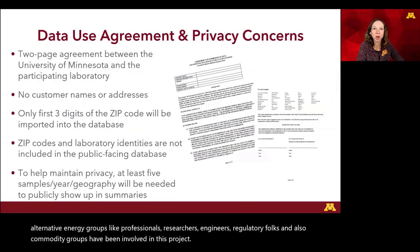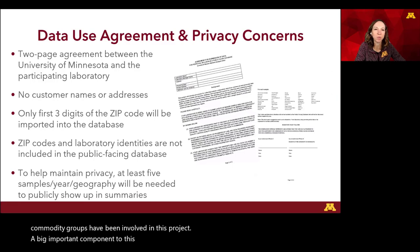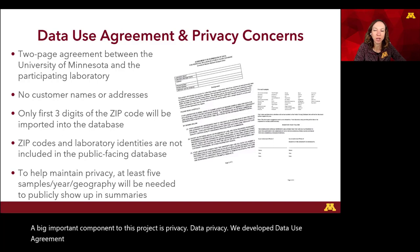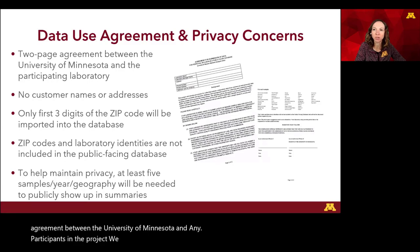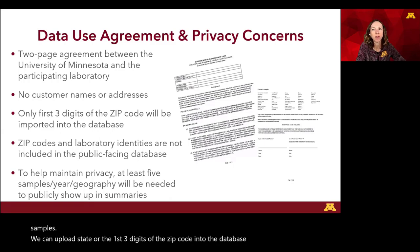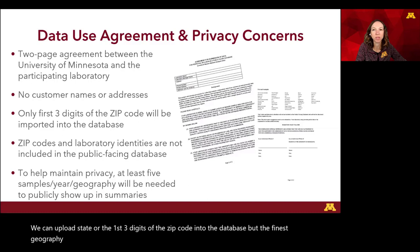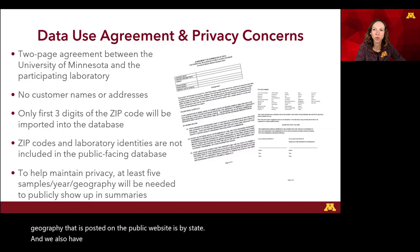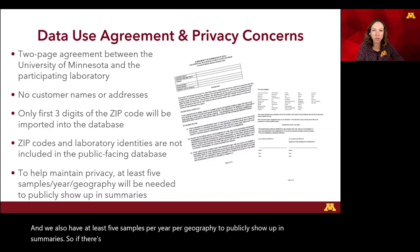A big and important component of this project is data privacy. We developed a data use agreement between the University of Minnesota and any participants in the project. We don't want any names or addresses associated with any of the samples. We can upload state or the first three digits of the zip code into the database, but the finest geography posted on the public website is by state. We also require at least five samples per year per geography to publicly show up in summaries, so if there's only one certain kind of animal farm in one state, they won't be easily identifiable.